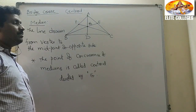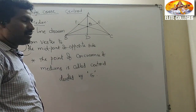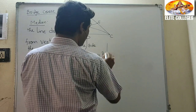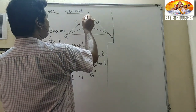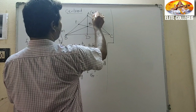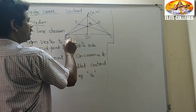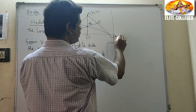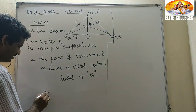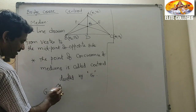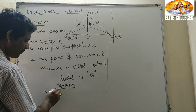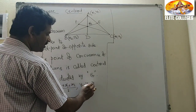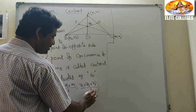Here we will discuss some properties about the centroid. What is the formula? If point A is (x₁, y₁), point B is (x₂, y₂), and point C is (x₃, y₃), then the centroid formula is G = ((x₁ + x₂ + x₃)/3, (y₁ + y₂ + y₃)/3).